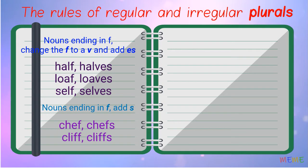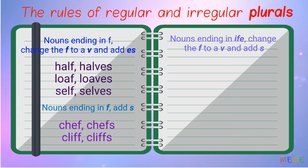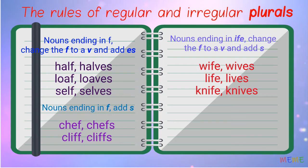For some words ending in -f, just add -s. Chef, chefs. Cliff, cliffs. For some nouns ending in -ife, change the -f to a -v and add -es. Wife, wives. Life, lives. Knife, knives.